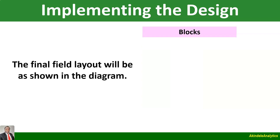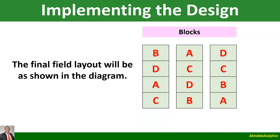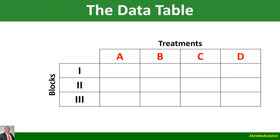Following this division, you will now randomly allocate the four treatments, A, B, C, and D, within each block. And that gives us an example of what we have there on our screen. From that experiment, the data will be extracted such that we have our treatments. In this particular example, I have arranged the treatments in columns while the blocks are in rows. But there is no hard and fast rule as to whether treatments should be in rows or columns — wherever you put it is okay, it doesn't affect your analysis.